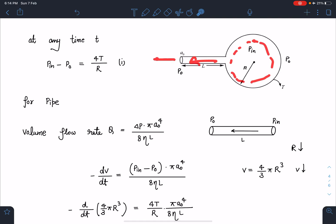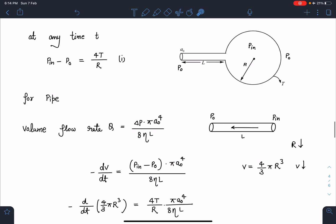That will be the volume coming out of this hole. So -dV/dt and this must be equal to (Pᵢₙ - P₀) divided by the resistance part.